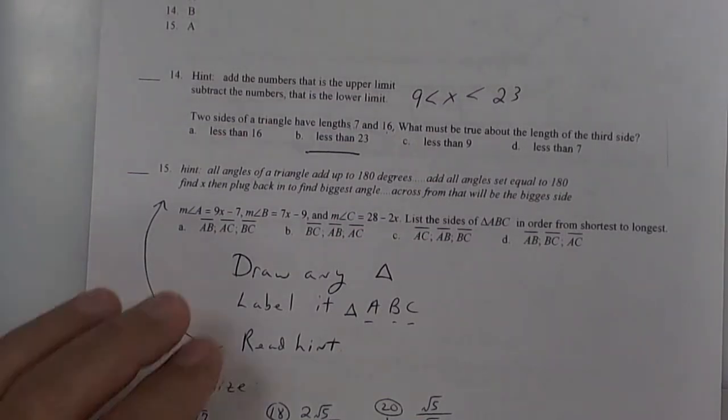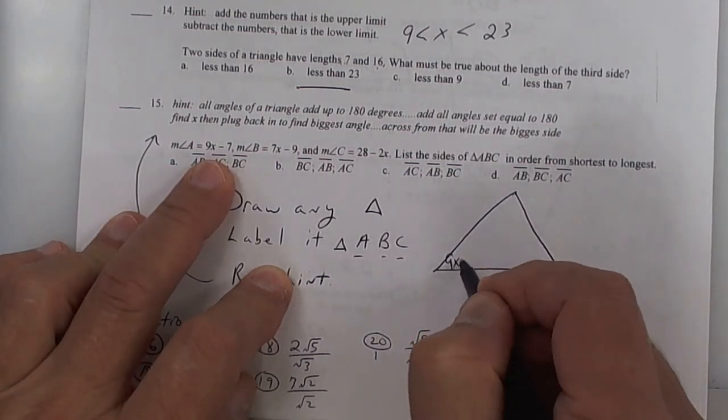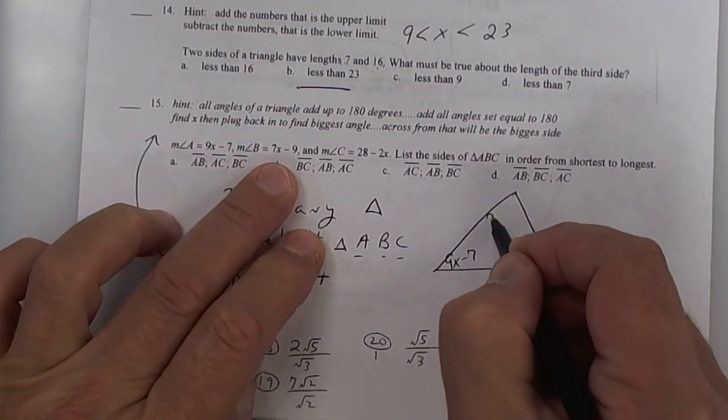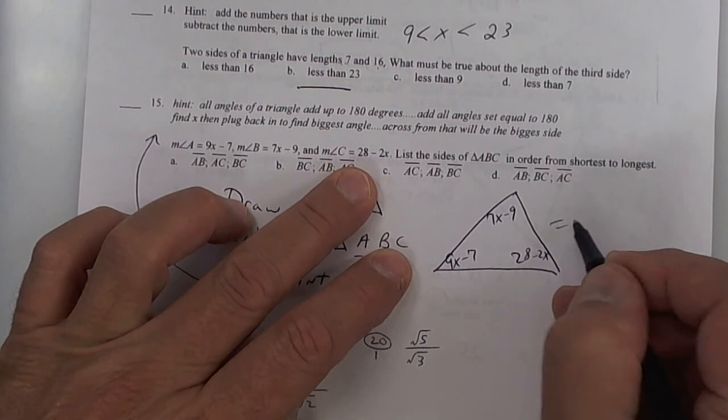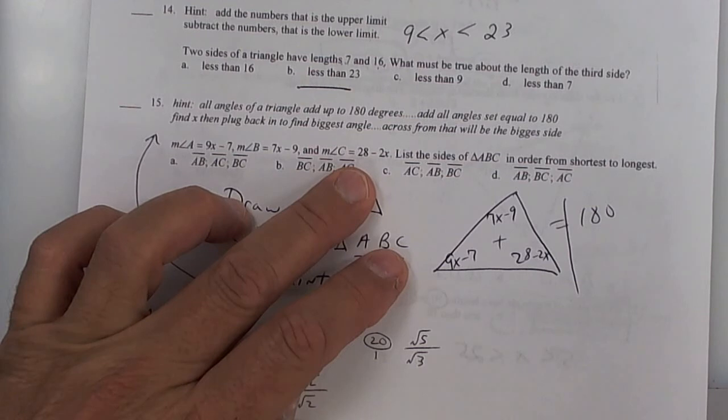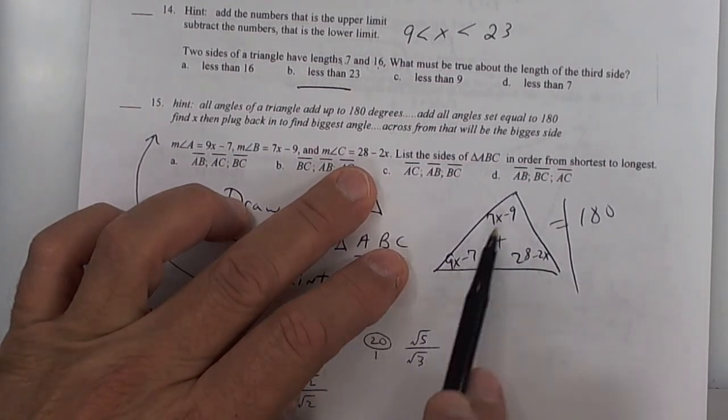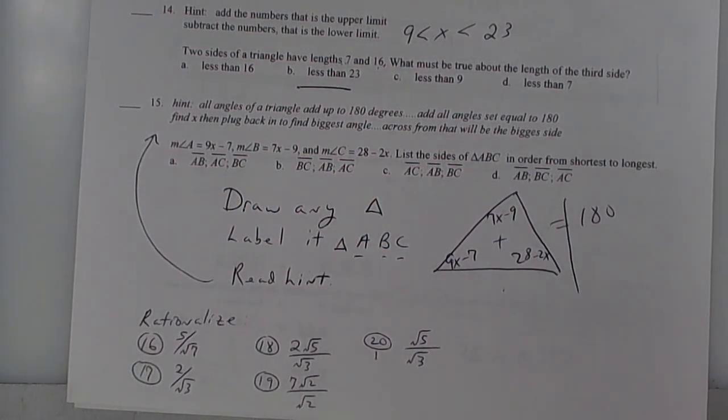All right. Number 15, real quick, draw your triangle. And then put 9x minus 7. Put 7x minus 9. And then put 28 minus 2x. And then add all of these up and set it equal to 180. You have to find out what x is. Once you find out what x is, plug it in to each one of these to determine the biggest side. I'm going to say it one more time. Add all of those up. Set it equal to 180. Find x. Plug it back in. All right. This will be on video. That's pretty much your test. Good luck on Monday. Tomorrow is Carnegie. Thank you.